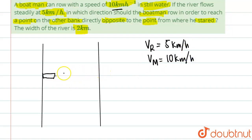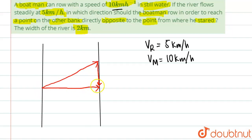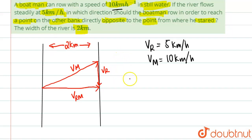He wants to reach the absolutely opposite side of the shore. The river has a speed in one direction, so he must row in an angled direction to compensate. This forms a vector triangle: vrm is the resultant, vm is 10 km/h, and vr is 5 km/h. The width of the river is 2 kilometers, but that won't be needed here.